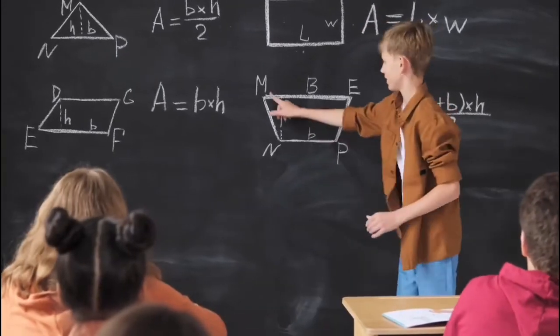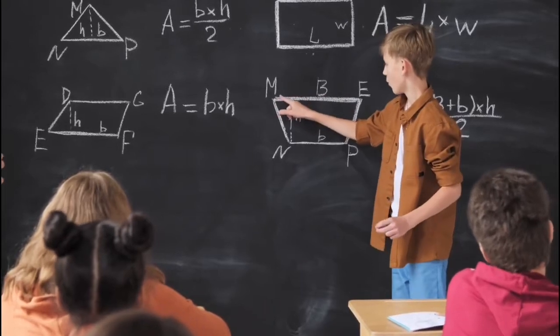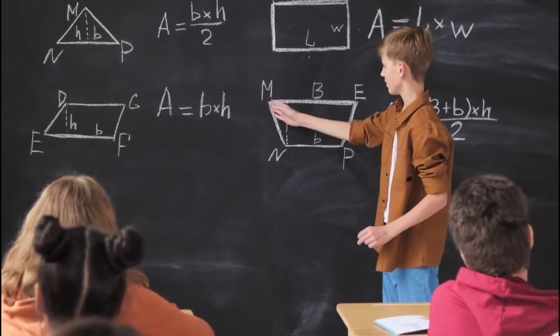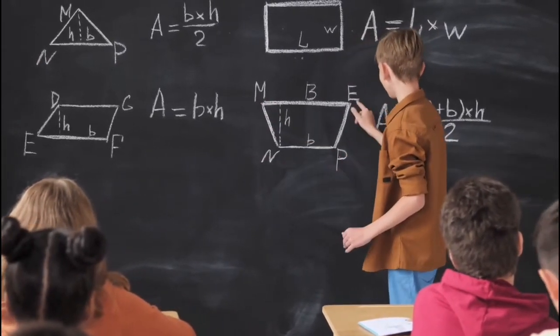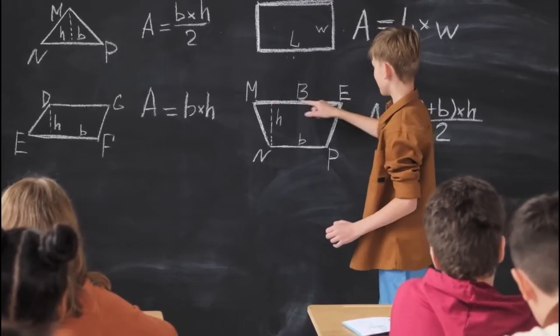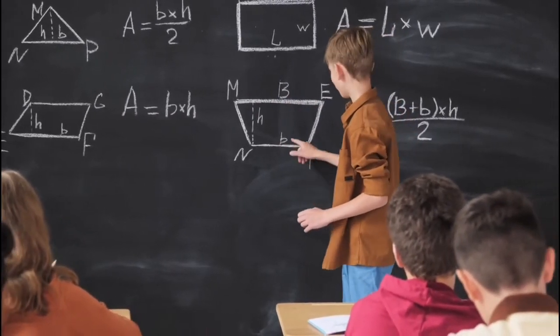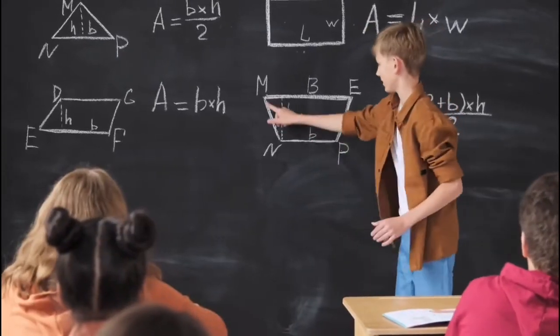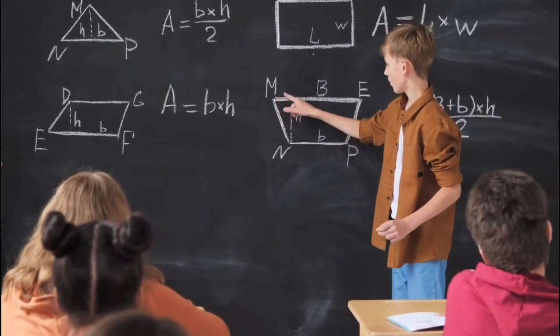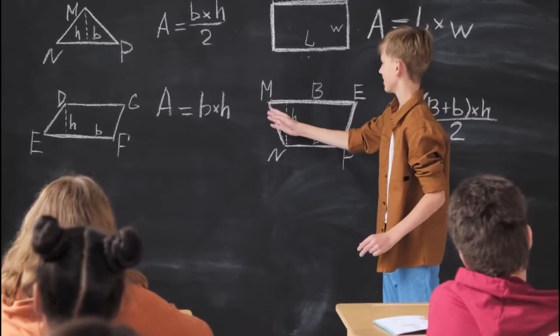Of course, if you want a more sophisticated method, you can tie the barometer to the end of a string, swing it as a pendulum, and determine the value of g at the street level and at the top of the building. From the difference between the two values of g, the height of the building, in principle, can be calculated.